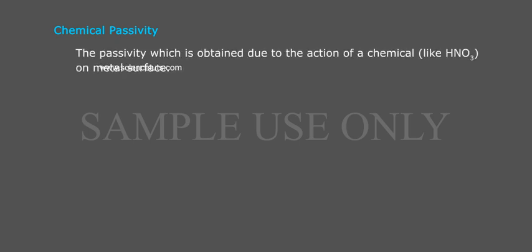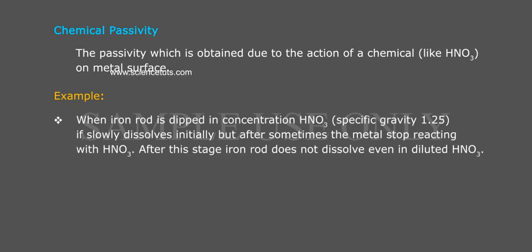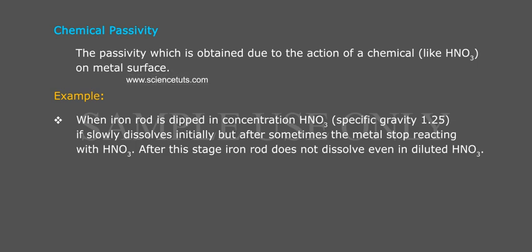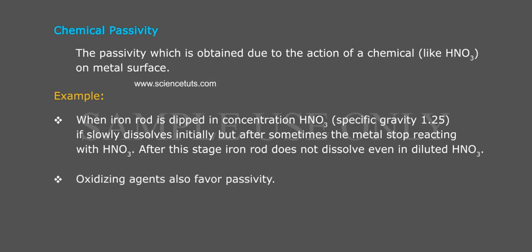Chemical passivity is the passivity obtained due to the action of a chemical like HNO3 on a metal surface. For example, when an iron rod is dipped in concentrated HNO3 (specific gravity 1.25), it slowly dissolves initially, but after some time the metal stops reacting with HNO3. After this stage, the iron rod does not dissolve even in diluted HNO3.